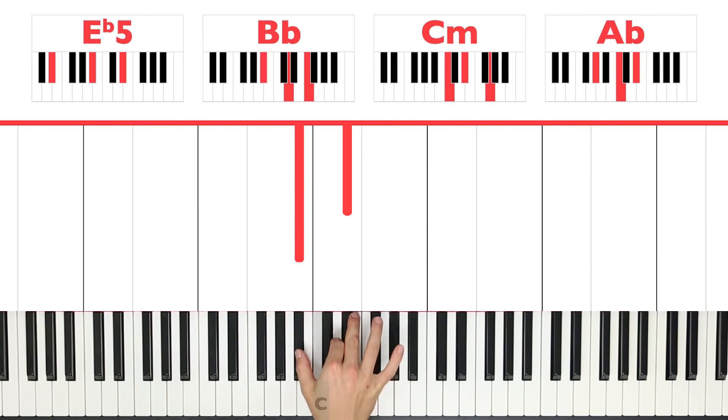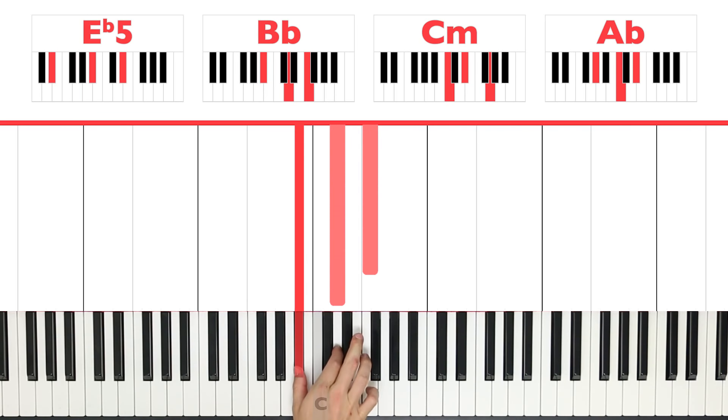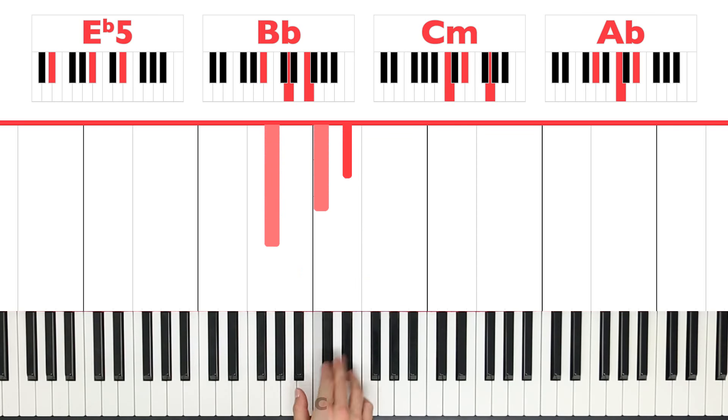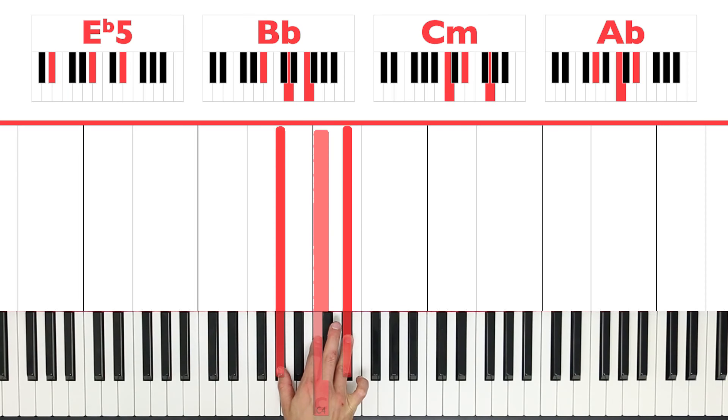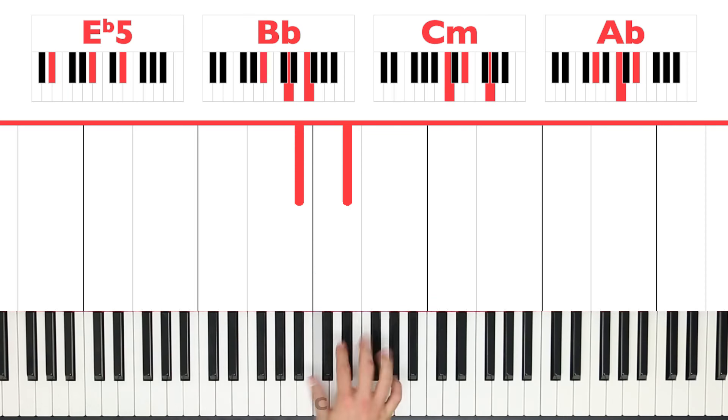Okay so now let's also put in the right hand. The right hand is going to play B flat and E flat for the first chord, and then B flat, D and F for B flat. G, C, E flat for C minor and A flat, C, E flat for A flat. Let's give that a go.